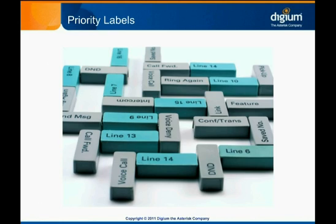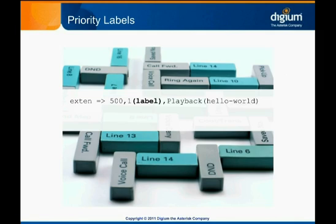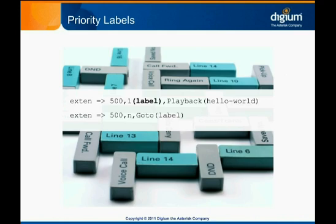Sometimes you may want to skip ahead several priorities or return to a previous priority. Asterisk lets you specify an arbitrary priority to jump to by letting you give it a label. To specify a label, put its name in parentheses immediately following the priority, before the comma separating the priority and the application. Though numbers, white space, and special characters are permitted as part of a priority label, it's best practice to stick to alpha characters for legibility. Once you've defined a priority label, you can use GoTo and similar dial plan applications to jump directly to that label. We'll see the syntax for the GoTo family of applications in an upcoming chapter.